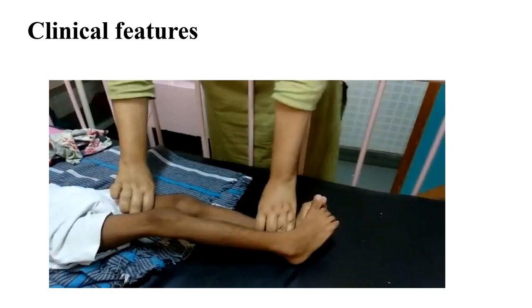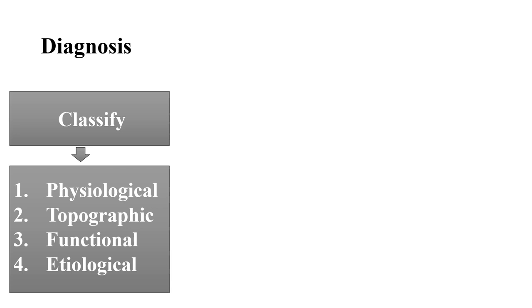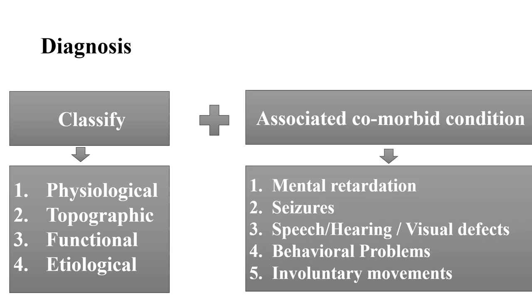Diagnosis of CP: after thorough physical examination, we classify CP according to physiological, topographic, functional, and etiological classification. For example, physiologically the patient may have spastic, athetoid, ataxic, or atonic CP; topographically: monoplegia, diplegia, quadriplegia, etc.; functionally: severity grade; and etiologically. We must also mention associated comorbid conditions — whether mental retardation, seizures, speech, hearing, or visual defects, behavior problems, or involuntary movements are present.